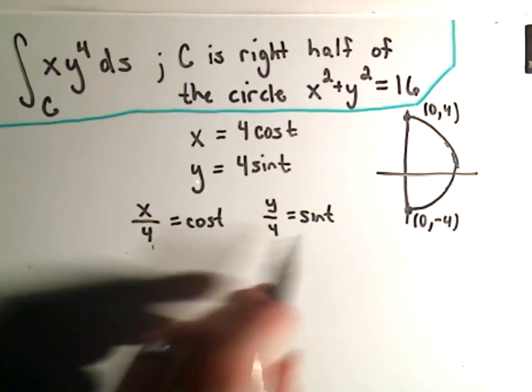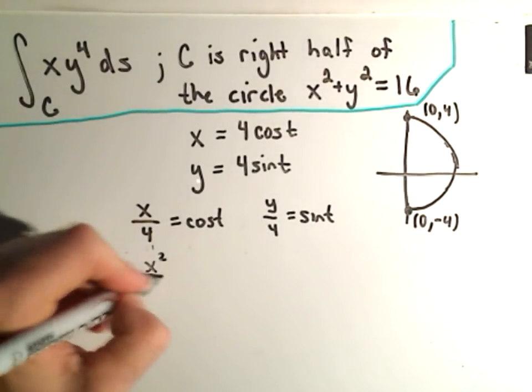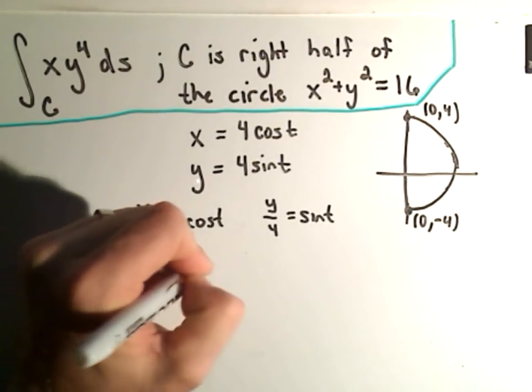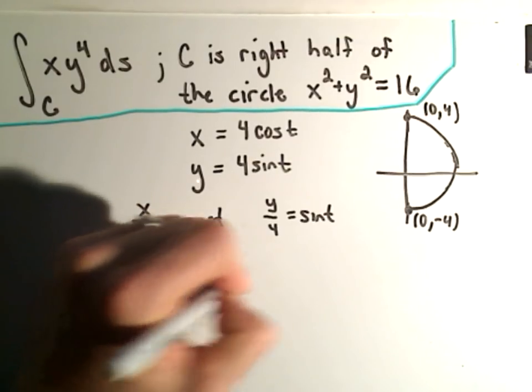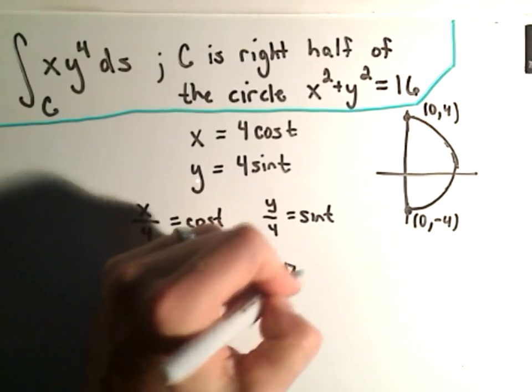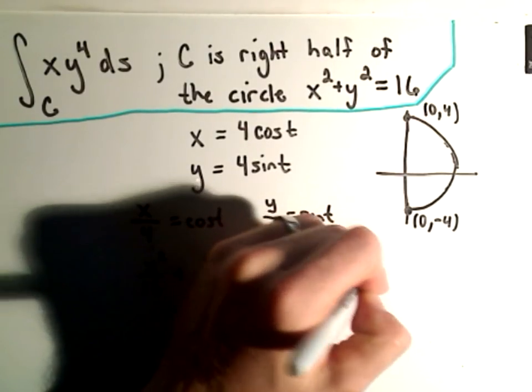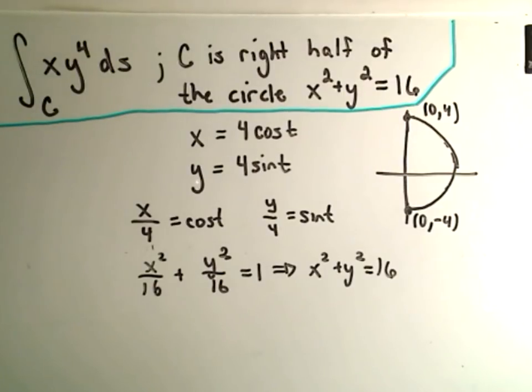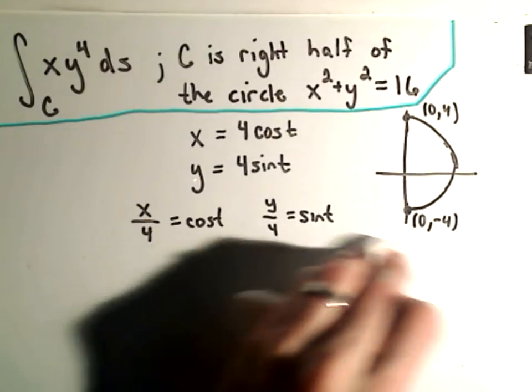Or equivalently, cos^2 + sin^2 = 1. So we would get x^2/16 + y^2/16 = 1. You could multiply both sides by 16, and you would get x^2 + y^2 = 16. So that's certainly the correct parametrization of the x and y coordinate.